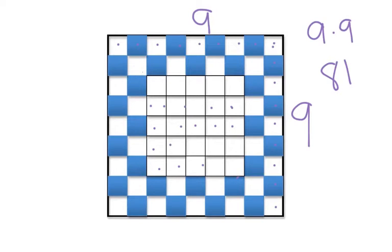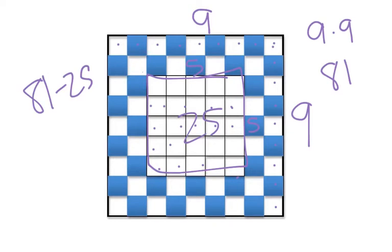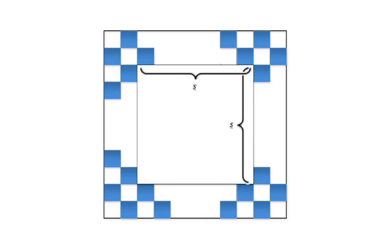Now the problem with that is we've got to eliminate these ones in here, which was five times five, so 25. So we could go 81 minus 25. And that would give us 56. Now the colored tiles are every other tile, so basically we have to cut that in half, and that would give us 28 tiles. That would be our total.